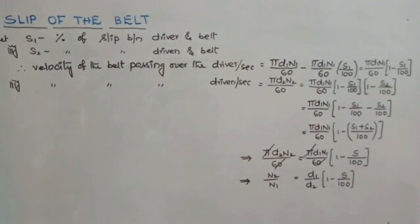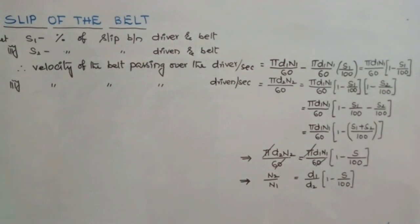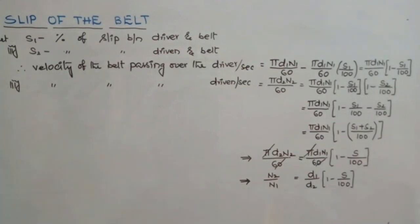That is how we calculate the velocity ratio when slip is taken into consideration. These are the two topics related to velocity ratio calculation in belt drives. I hope all of you understood this concept.